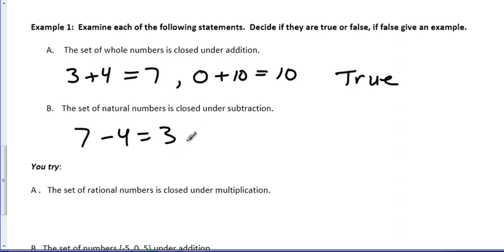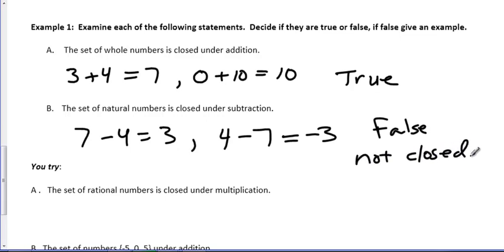Let's try doing it the other way around. 4 minus 7, that's negative 3. Negative 3 is not a natural number. So therefore, this is false or not closed would be the term, whereas this is closed up there.